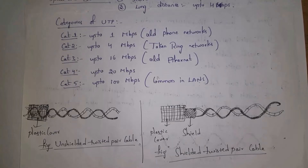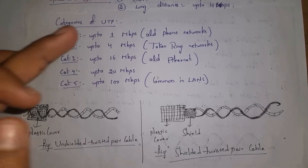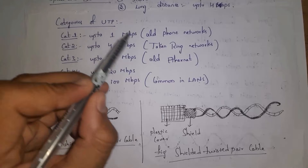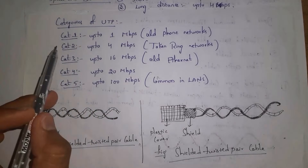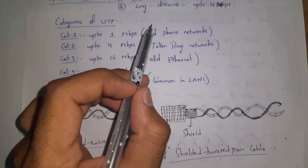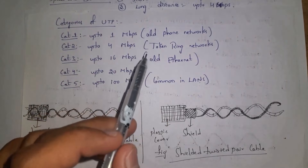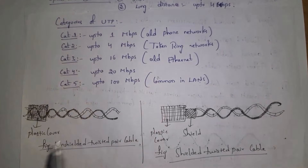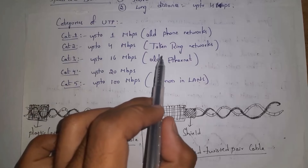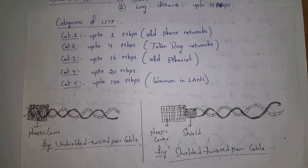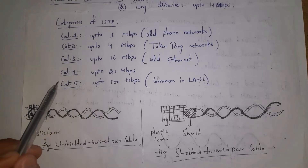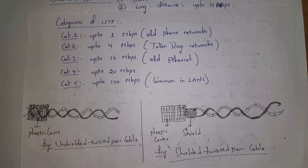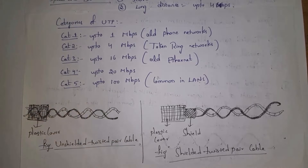Unshielded twisted pairs are classified into five categories. Category 1 is used in old phone networks with a data speed of 1 Mbps. Category 2 is used in token ring networks with 4 Mbps. Category 3 is 16 Mbps, used in old Ethernet. Category 4 is 20 Mbps. Category 5 is 100 Mbps, which is what we currently use in local area networks in colleges and offices.